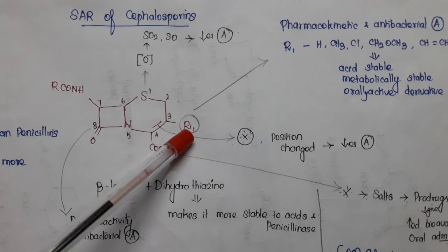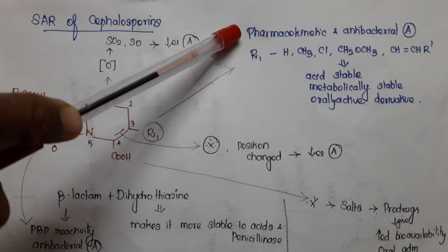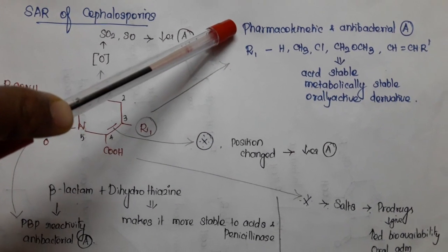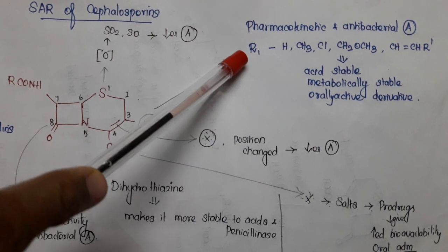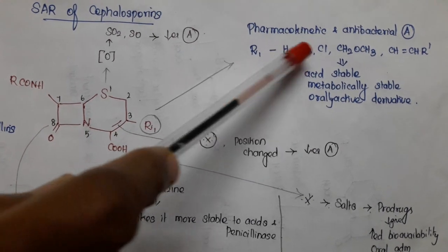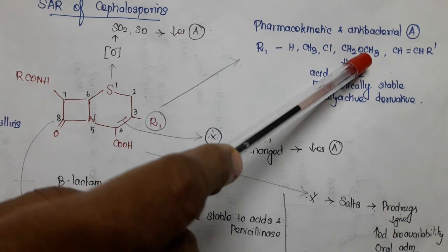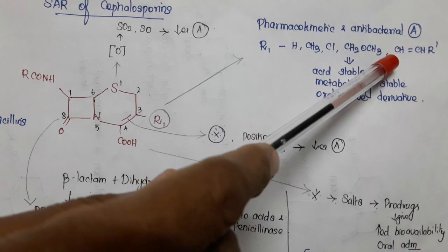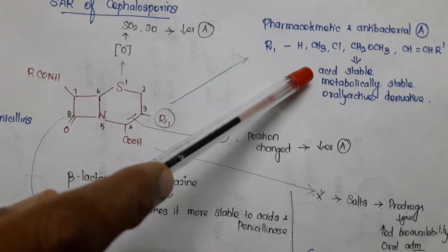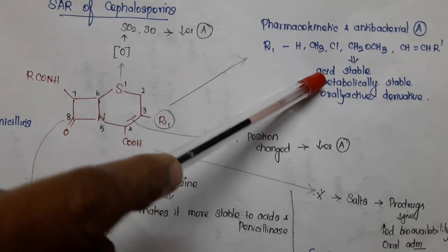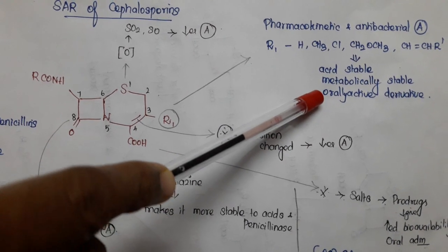In the third portion we have R1, which is important for pharmacokinetic properties and antibacterial activity. In the case of R1, if we introduce H, CH3, Cl, CH2OCH3, or CH=CHR, we are getting an acid-stable compound that is metabolically stable and orally active.